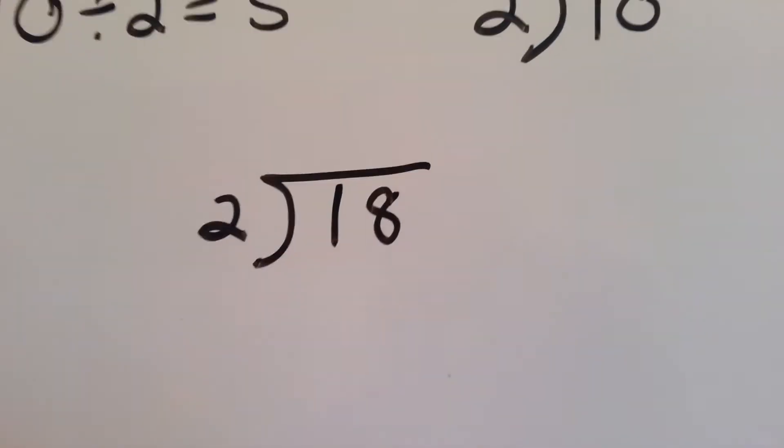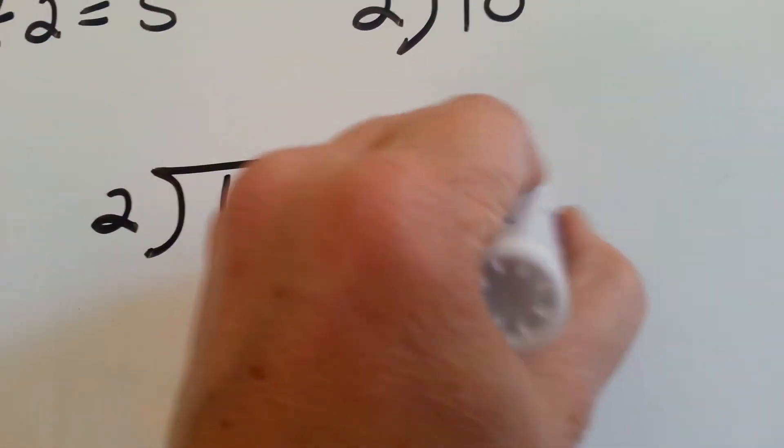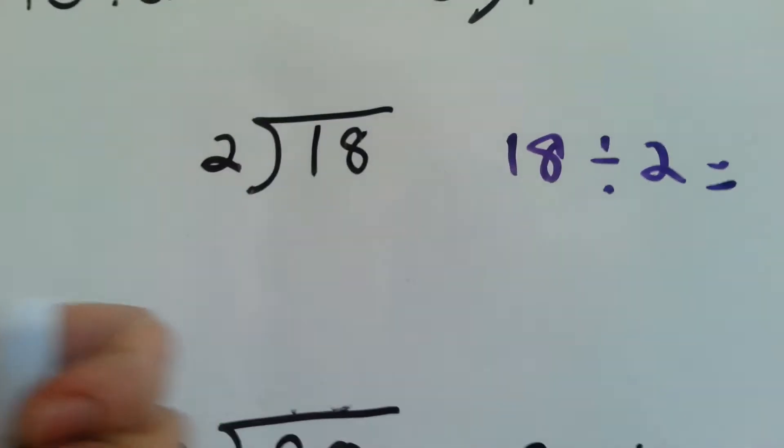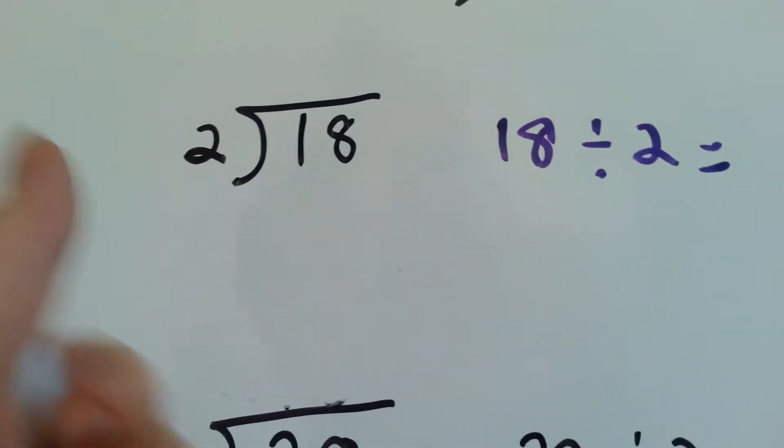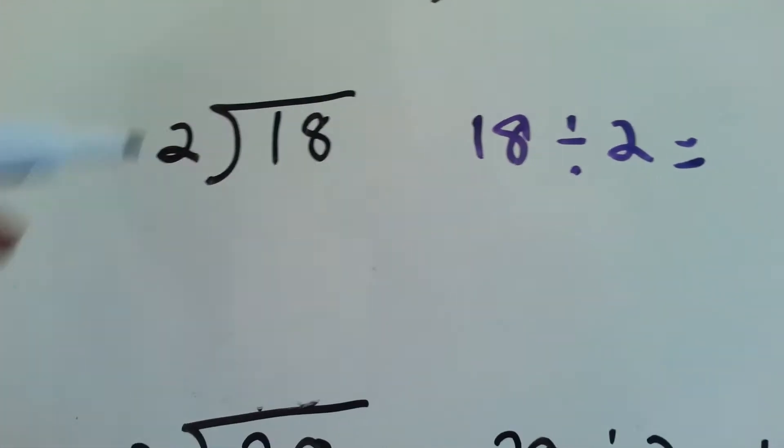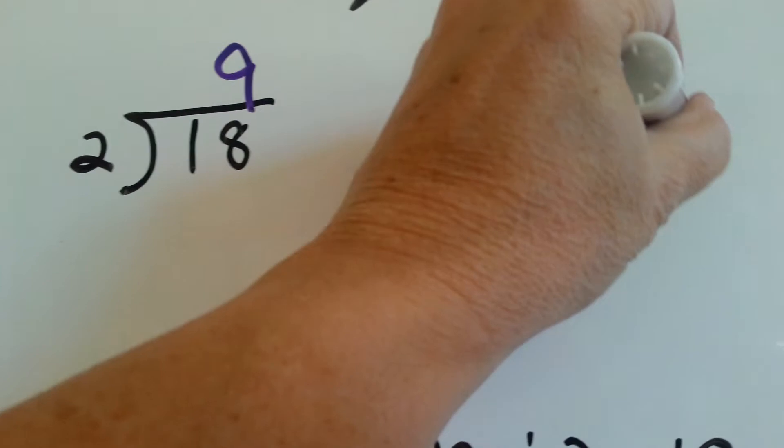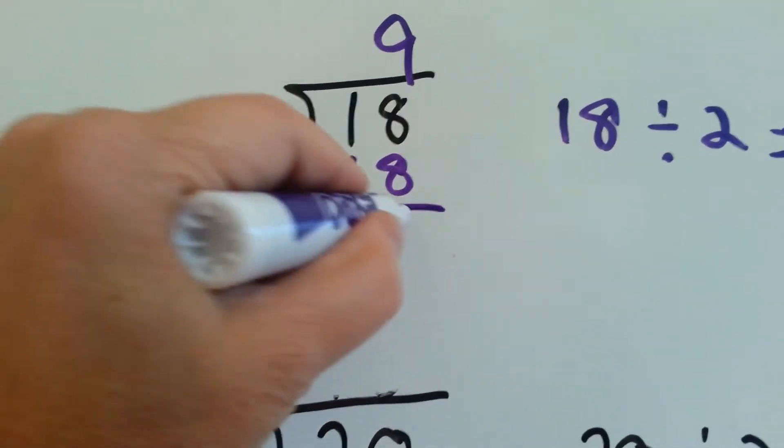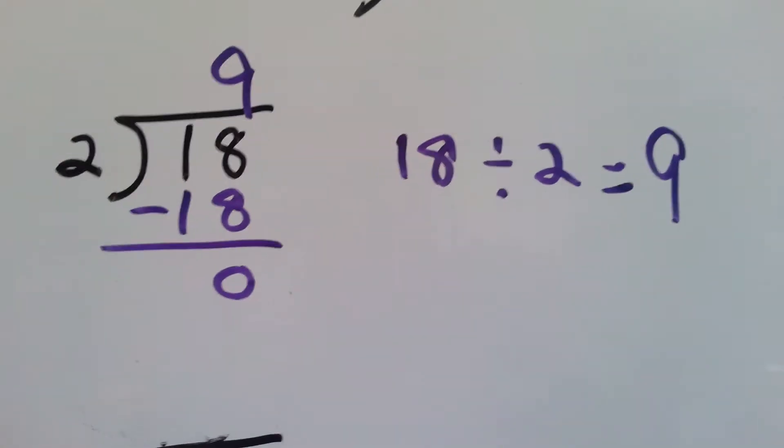2 goes into 18 how many times? 18 divided by 2. Count by 2's. 2, 4, 6, 8, 10, 12, 14, 16, 18. 9 times. 2 times 9 is 18. We're going to do our subtraction and we have 0 left over.